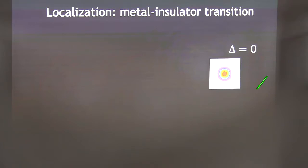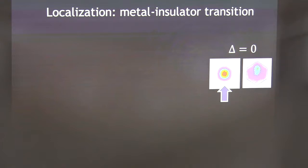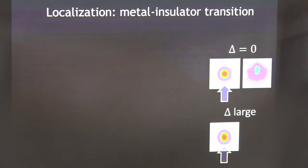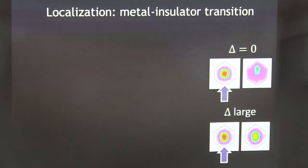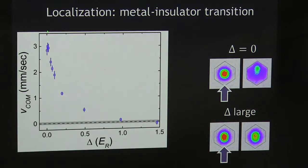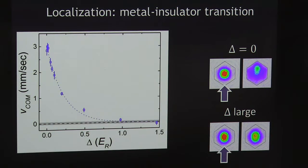Here's what those measurements look like. We start with a clean system, apply an impulse, and then the atoms move — this is a crystal momentum distribution, so there's a net motion there. If we apply a lot of disorder, the gas remains motionless after we apply force to it, even though the Fermi energy or the apparent Fermi energy is well within the Brillouin zone. Here are measurements of that center of mass velocity for varying amounts of disorder, and one way or another we can determine a critical disorder to make that metal into something which is an insulator, consistent with zero motion within our experimental uncertainty.